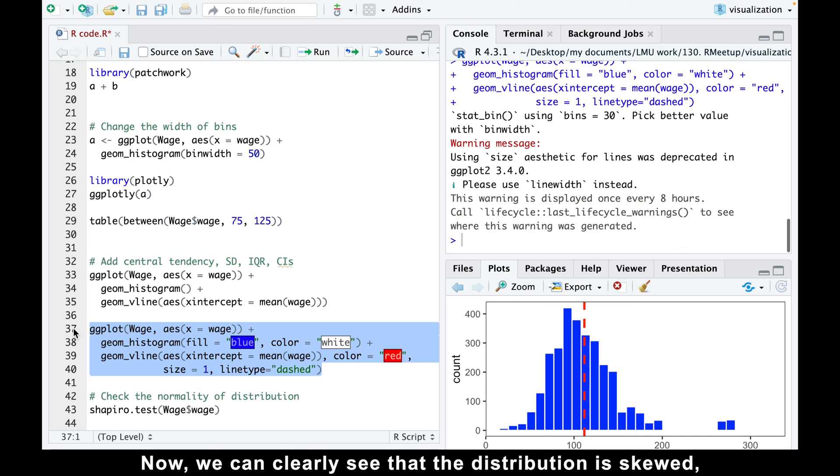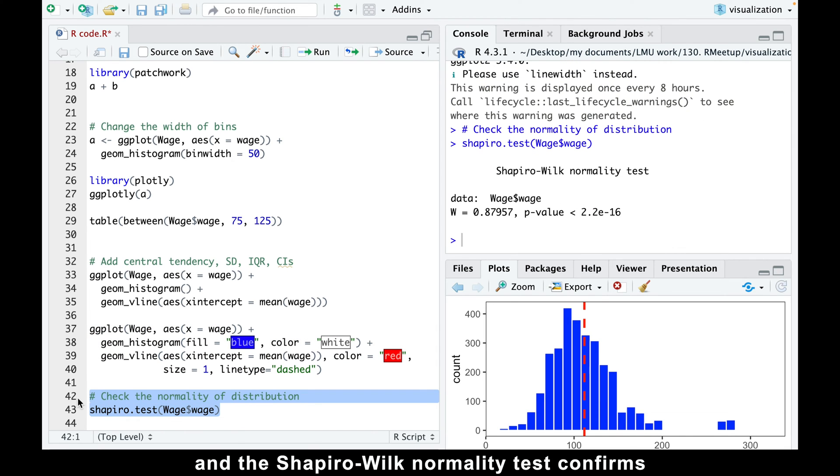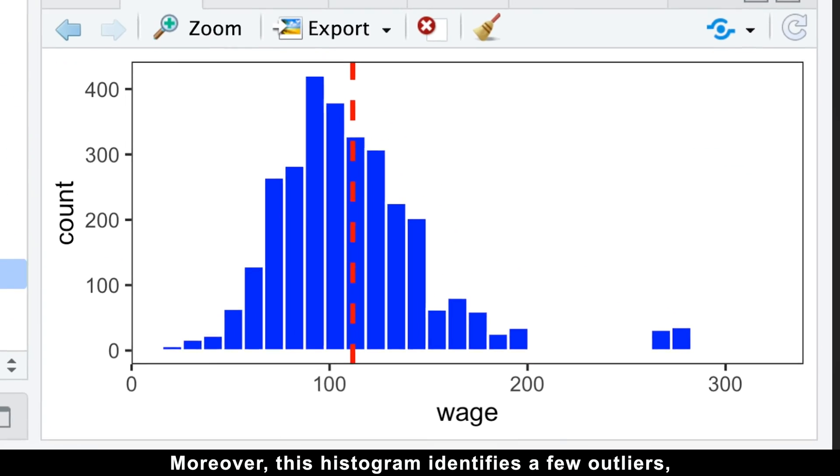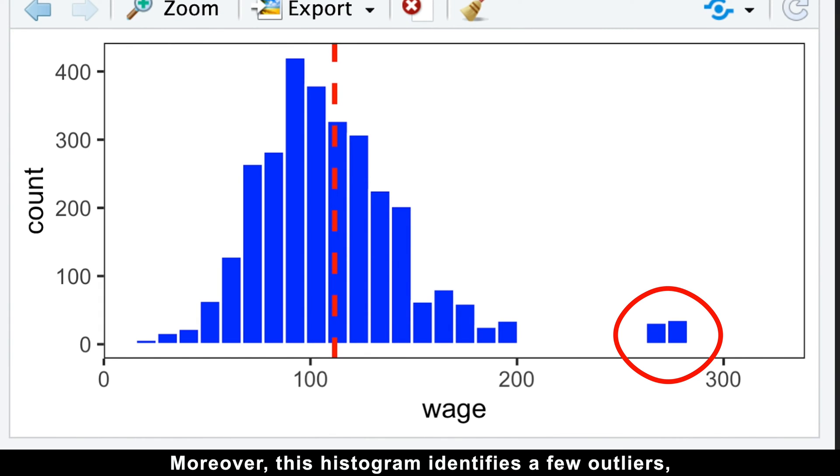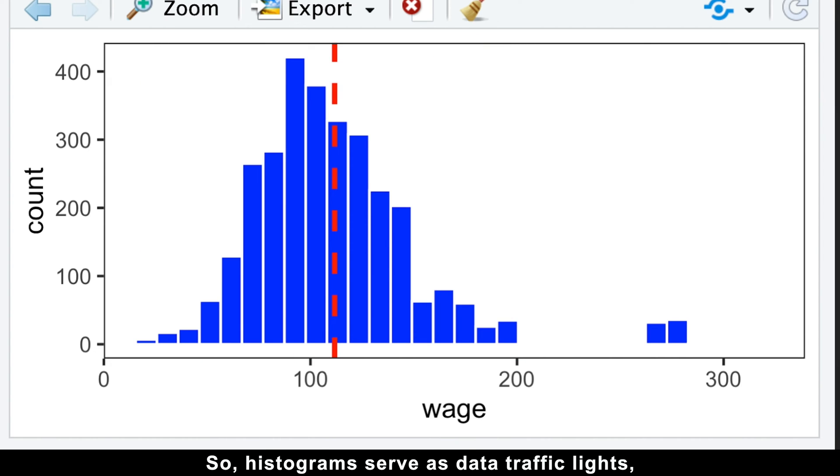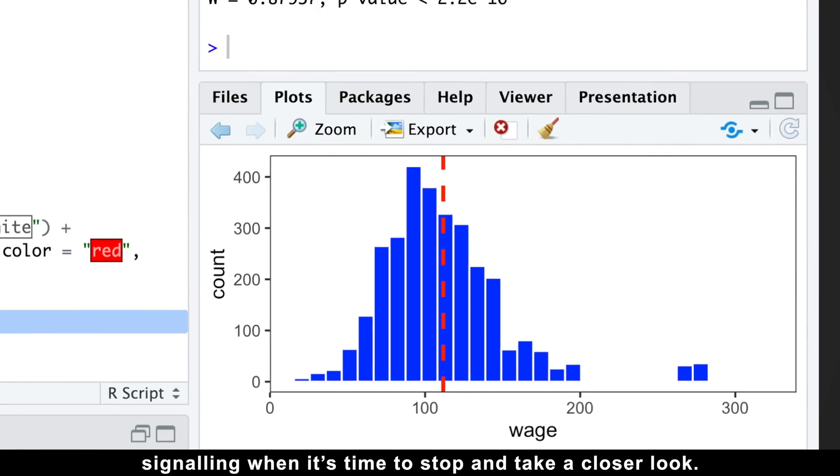Now we can clearly see that the distribution is skewed, and the Shapiro-Wilk normality test confirms that our wages are not normally distributed. Moreover, this histogram identifies a few outliers which represent wealthy individuals which fall outside the main body of the salary distribution. Histograms can serve as data traffic lights, signaling when it's time to stop and take a closer look.